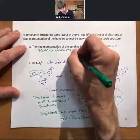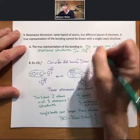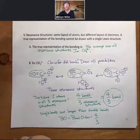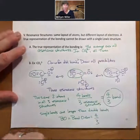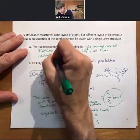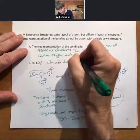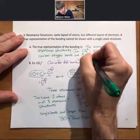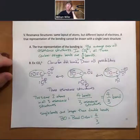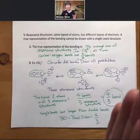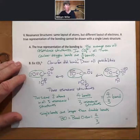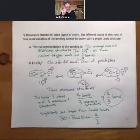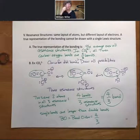In carbonate, all three carbon-oxygen bonds are four-thirds bonds, meaning they are shorter than a single bond but longer than a double bond. So in terms of length: single bond > four-thirds bond > double bond. The bond order is four-thirds, compared to one for a single bond and two for a double bond, as we'll discuss in future videos.